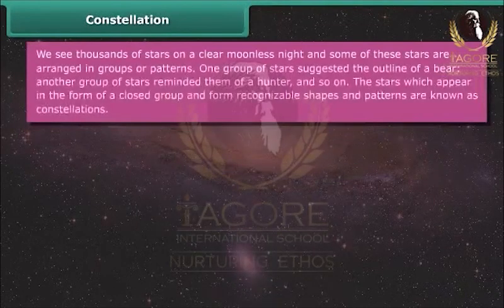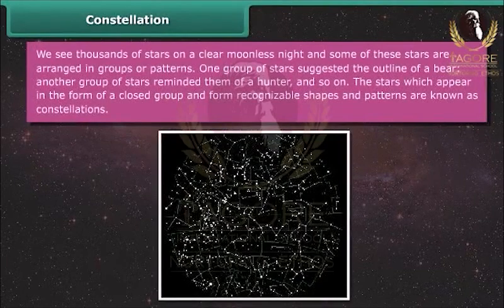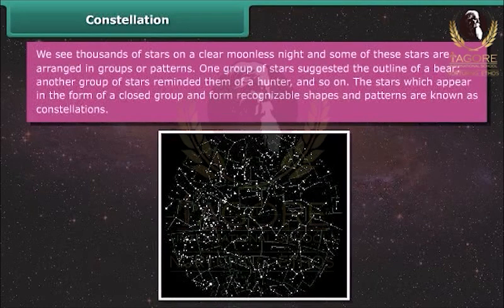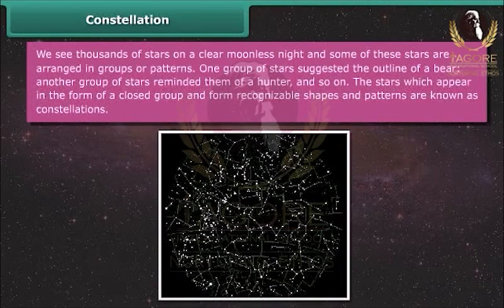We see thousands of stars on a clear moonless night, and some of these stars are arranged in groups or patterns. One group of stars suggested the outline of a bear, another group reminded them of a hunter, and so on. The stars which appear in the form of a closed group and form recognizable shapes and patterns are known as constellations.